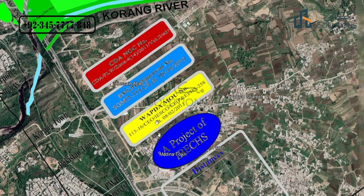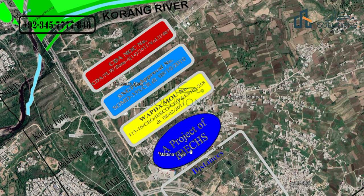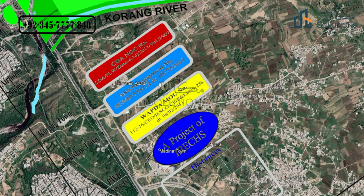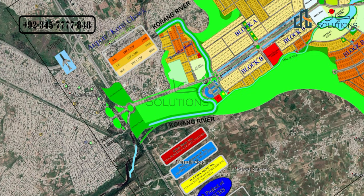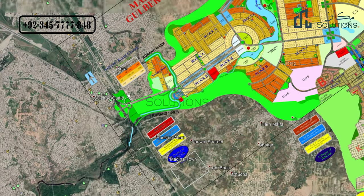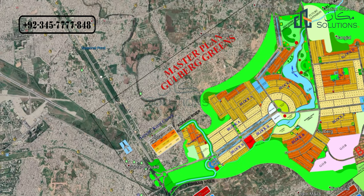The developer is IBECHS — the Intelligence Bureau Employees Cooperative Housing Society. This is a top location in Islamabad. The entrance to Gulbuk Greens faces the Islamabad Highway, and you can enter from Zero Point via the signal-free corridor.